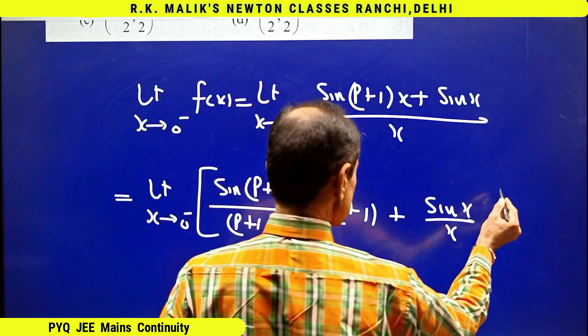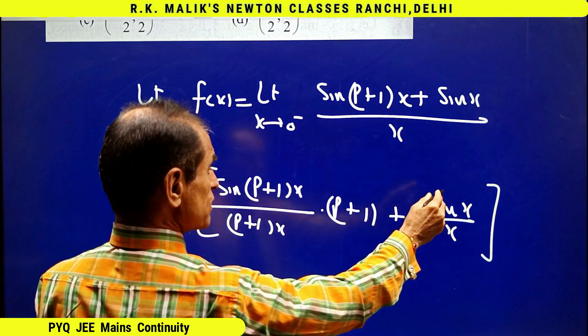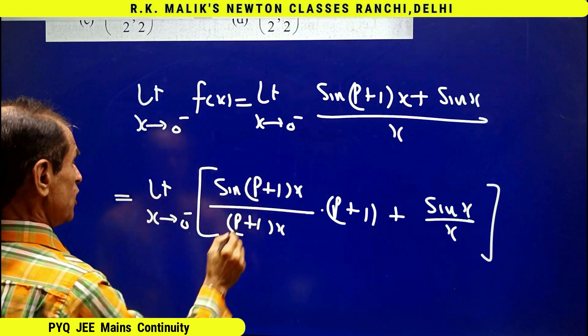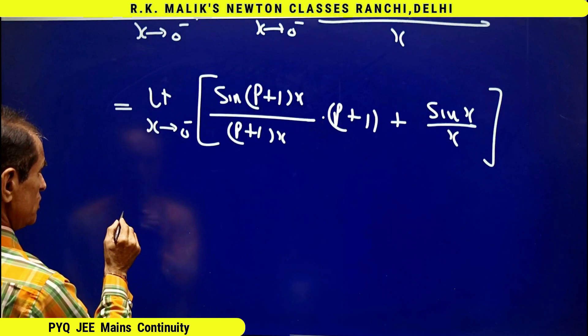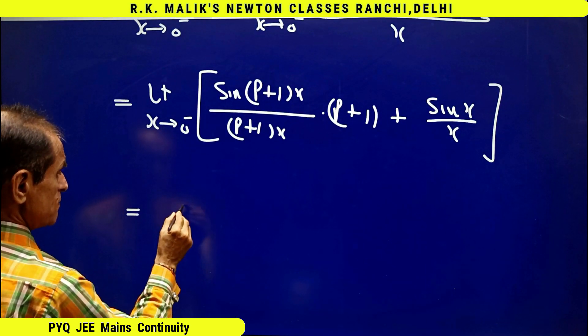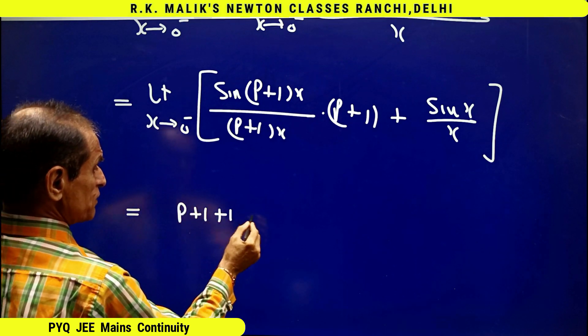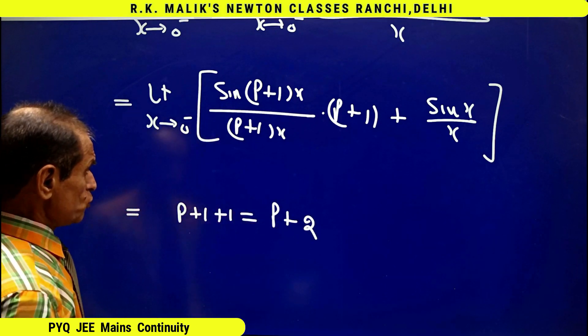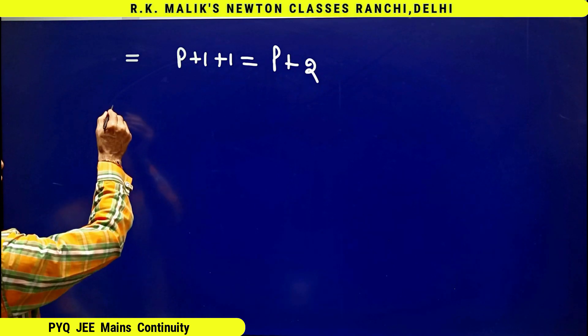The value of this is 1, the value of this is also 1, hence I get (p+1) + 1, that is p+2. Similarly, if I want to find right hand limit.